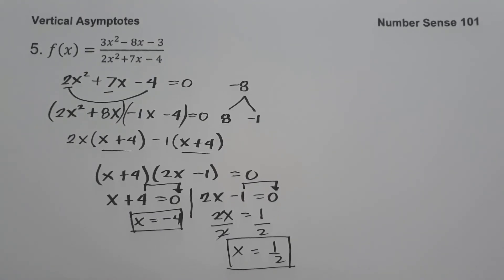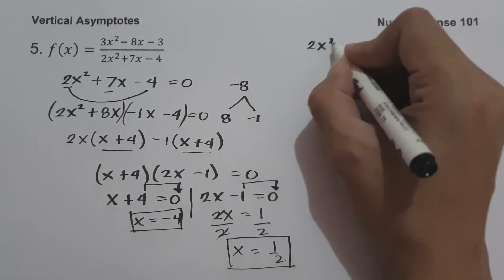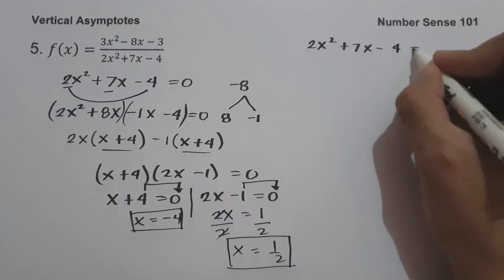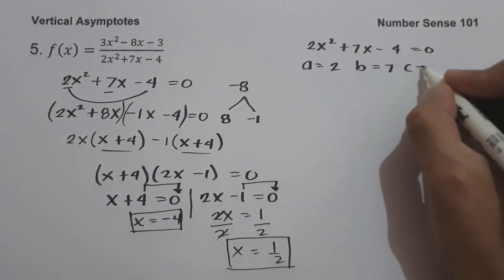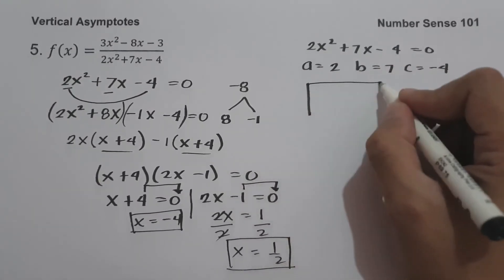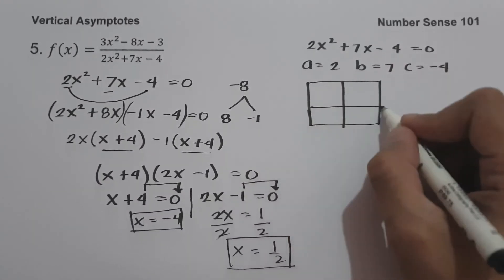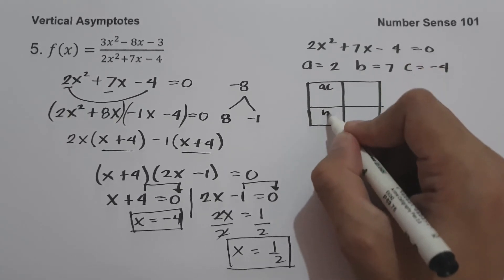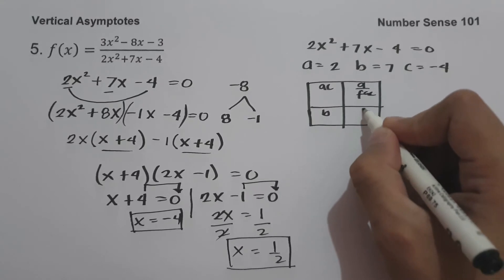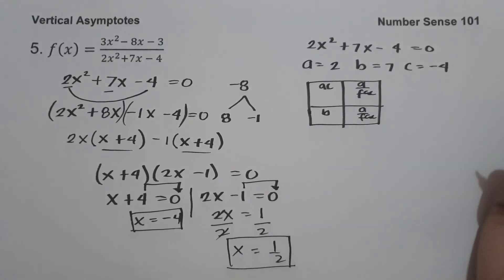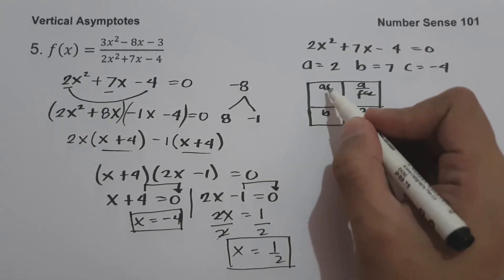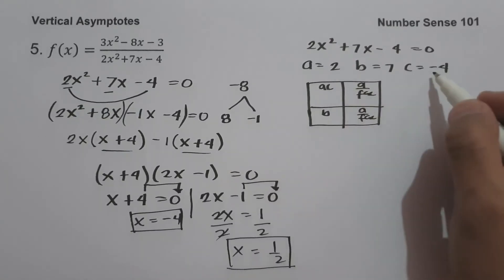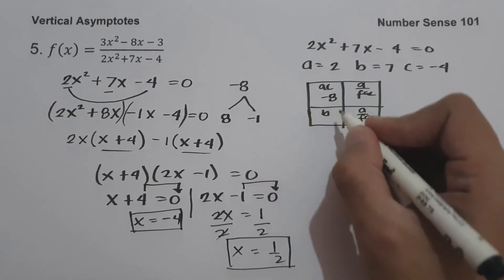Let me show you another solution on how to find the factors of this expression. We have 2x squared plus 7x minus 4 equal to 0. The value of a is 2, b is 7, and c is negative 4. Using the box method, we find ac: 2 multiplied by negative 4 is negative 8. The value of b is 7. What two numbers multiply to negative 8 and add to 7? That is 8 and negative 1.